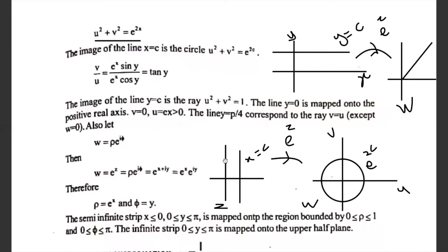In the z-plane, the line x = c maps onto a circle in the w-plane with center at (0, 0) and radius e^c. This can be written simply as |w| = e^c.